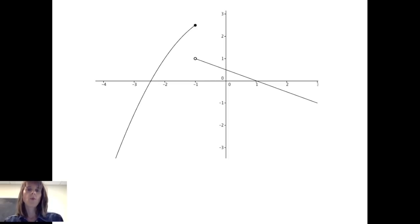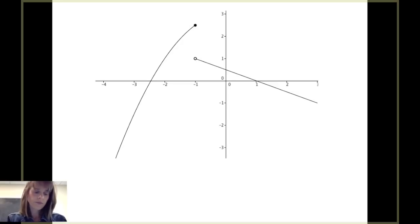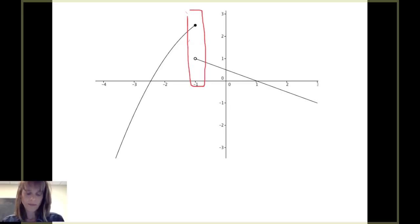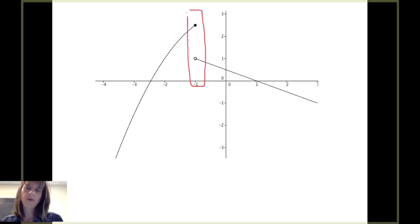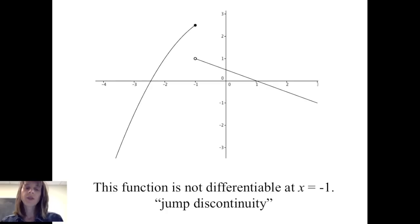Here's a case where the function is not differentiable at x equals negative 1. If we zoom in to a very narrow window around x equals negative 1, there is no way that graph would ever look like a line. We have to look at what happens to the slope coming from both the left and right of negative 1. In this case, the function is not differentiable at x equals negative 1 because there is a jump discontinuity there.